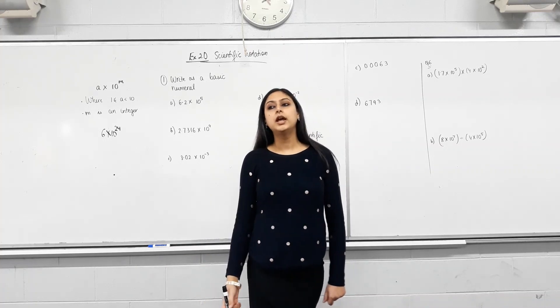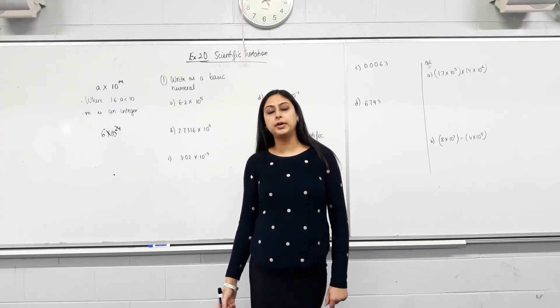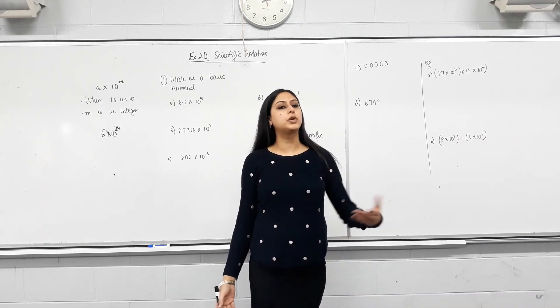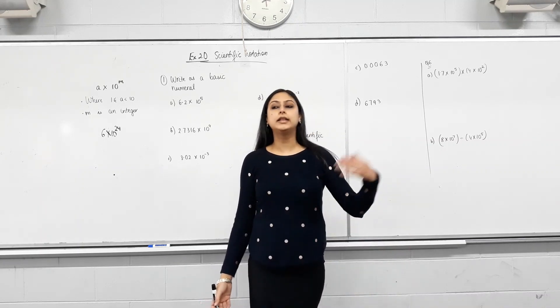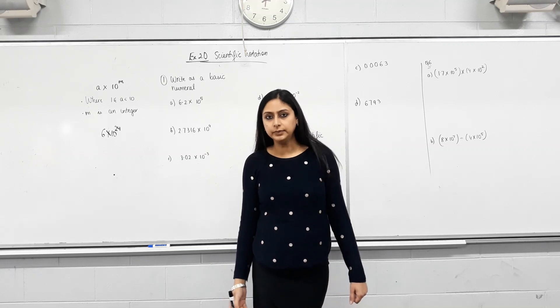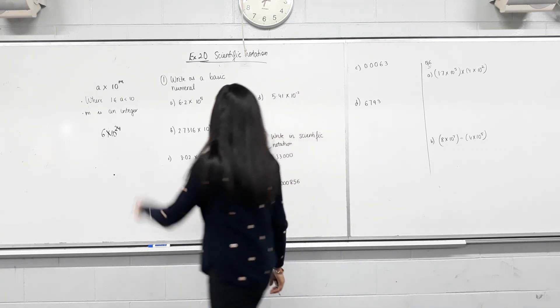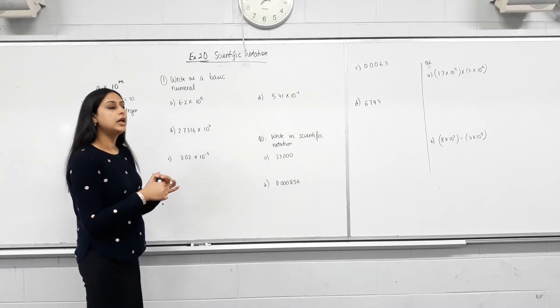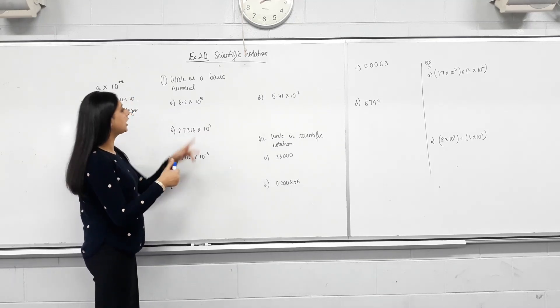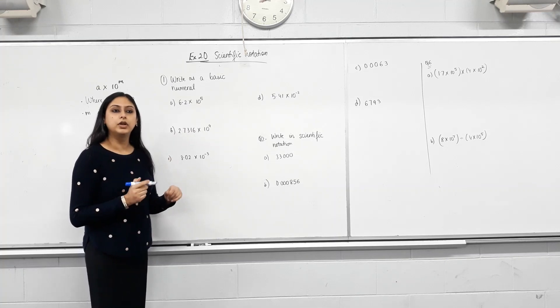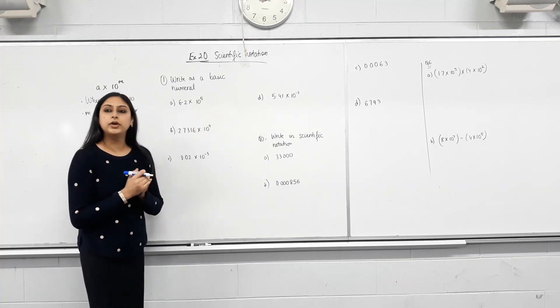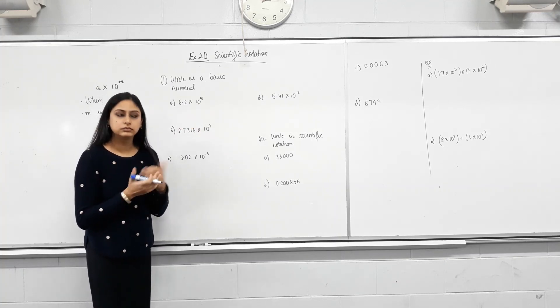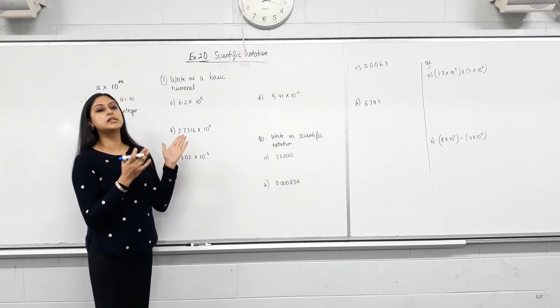So today we're going to learn how to convert a basic number, a basic numeral into a scientific notation form and the other way around. Is that clear? Yes. So write as a basic numeral. So what you have to do is you have to get rid of the scientific notation. Now, it's 6.2 times 10 to the power of 5. Is the power positive or negative?